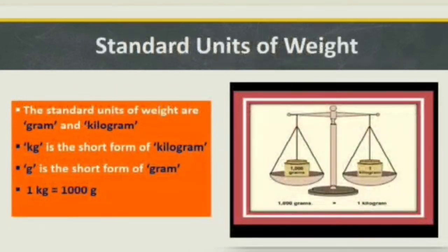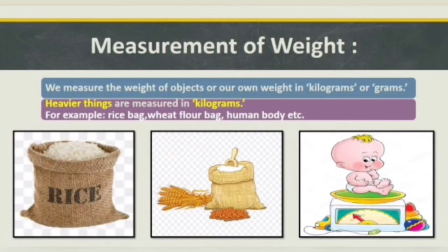What are the standard units of weight? The standard units of weight are gram and kilogram. Kg is the short form of kilogram, and g is the short form of gram. One kilogram is equal to 1000 grams. Look at this picture — both pans of the weighing balance are at equal level, which means the weight is balanced or equal. We measure the weight of objects or our own weight in kilograms or grams.